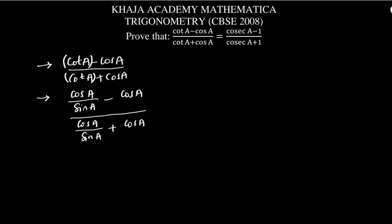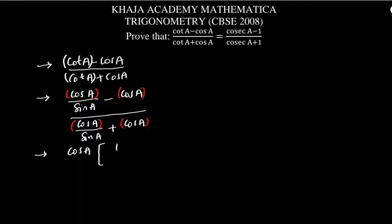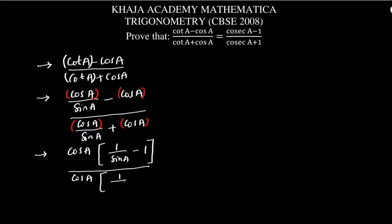In the numerator, I have cos A in both terms, so I will take cos A common. That leaves (1 by sin A minus 1) in the numerator. In the same way, in the denominator I also take cos A common, leaving (1 by sin A plus 1).